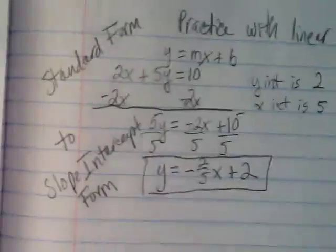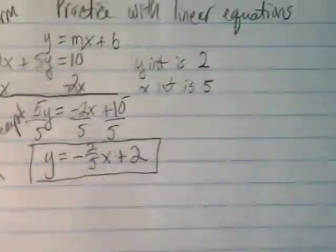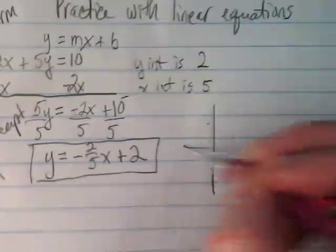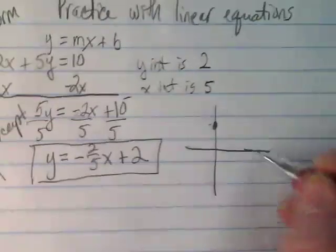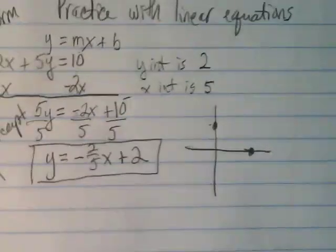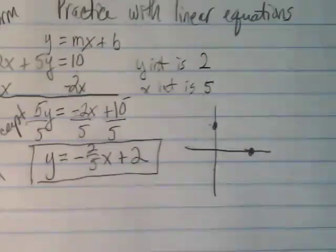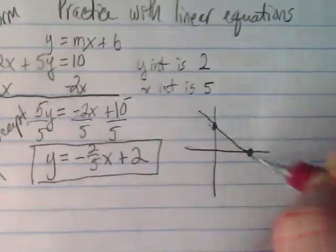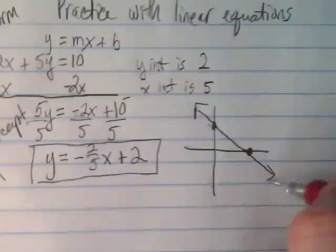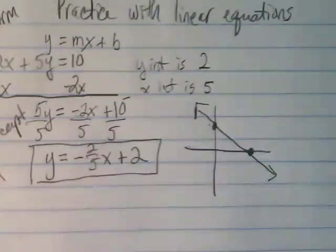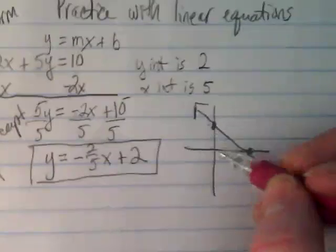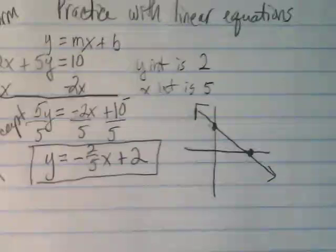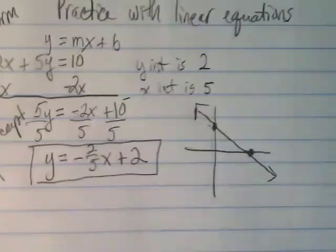And then we could use our slope to get our negative line. And I want you just to picture on a graph. I should have brought my graph stamp up here. If this is 2 on the y intercept, 5 would be over here on the x intercept. And that would create a negative slope that if I was doing this completely accurately would be negative 2 over 5, where it's dropping down 2 and running across 5.